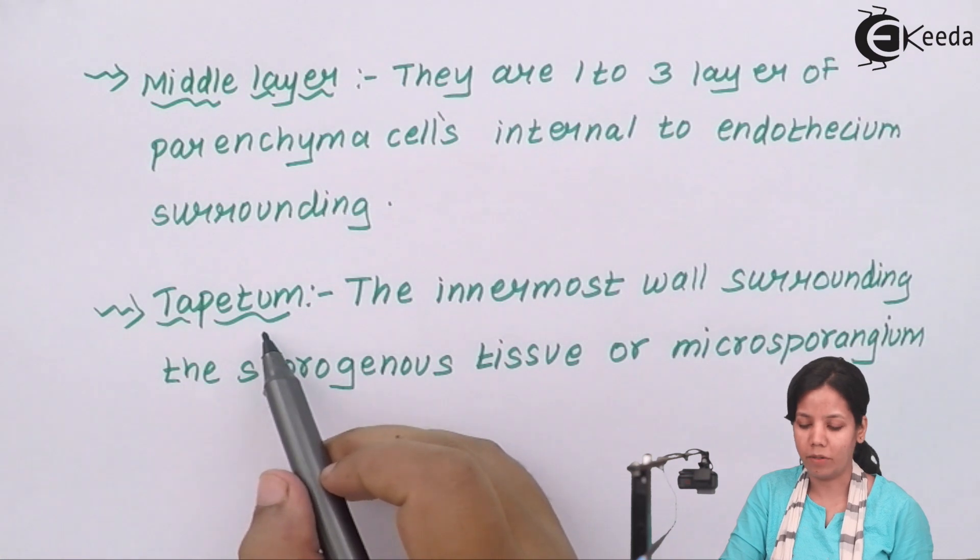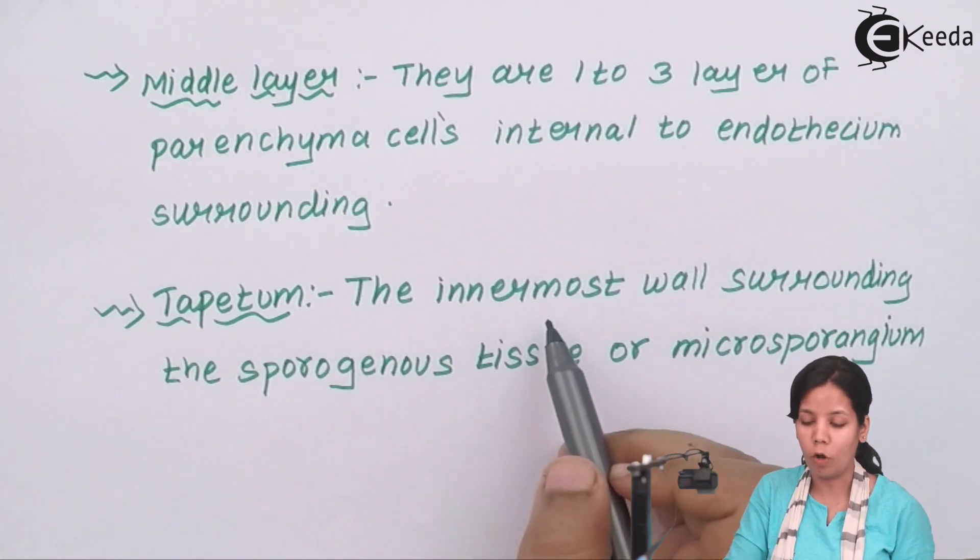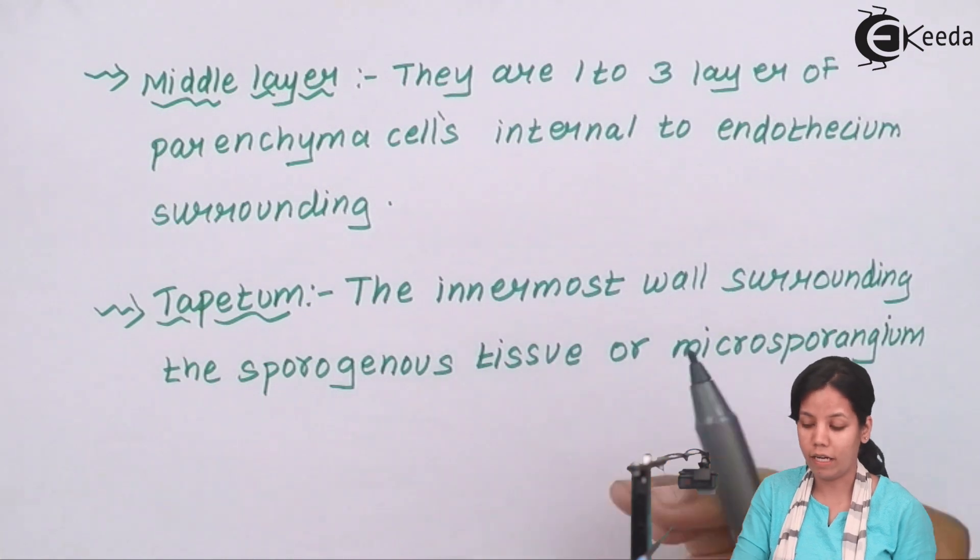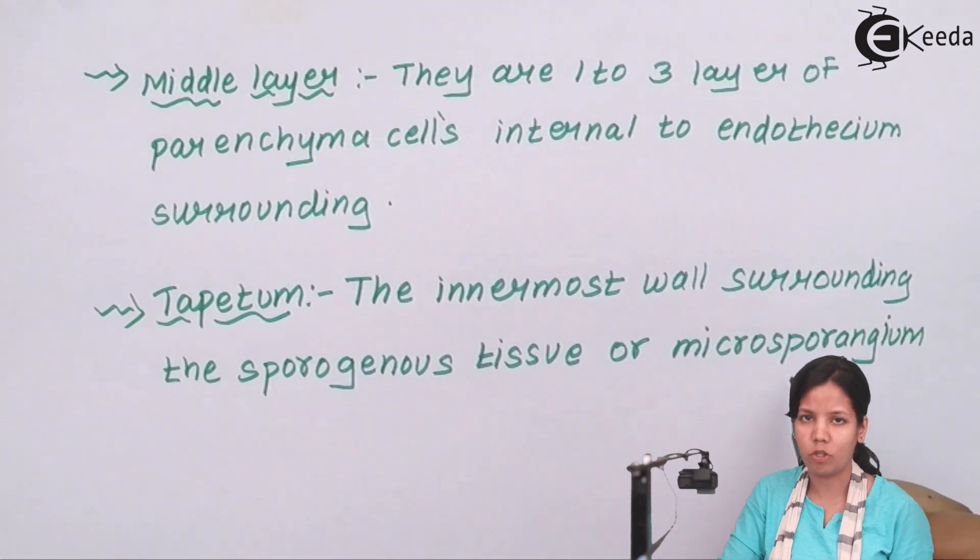The last layer is tapetum. Tapetum forms the innermost wall surrounding and this wall surrounding is basically around sporogenous cells or you can say microsporangium.